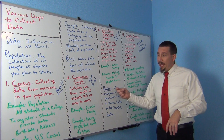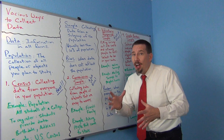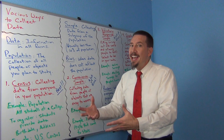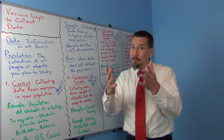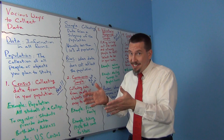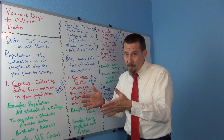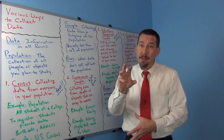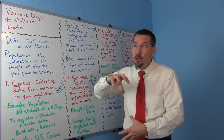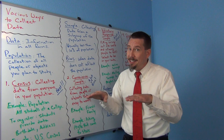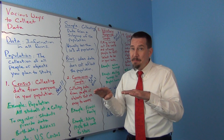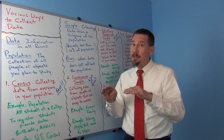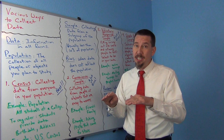Walking down the mall and bumping into somebody and asking them a question is not random. That's random the way you might think of it, but that's not random in statistics. Not all of the millions of people in your population had a chance to bump into you at the mall. Random means you made sure that everyone in your population had a chance to be included in your sample.